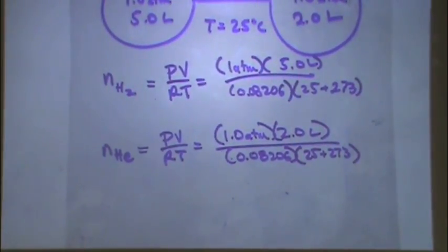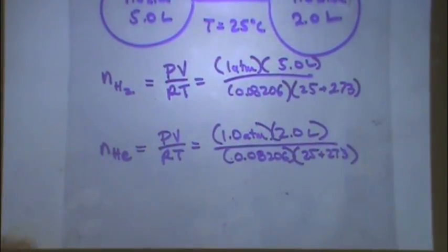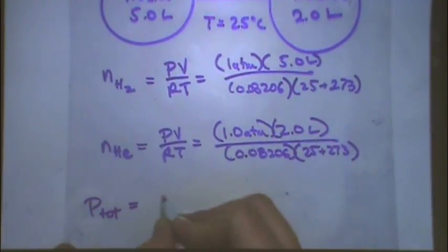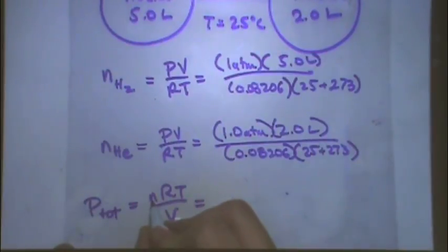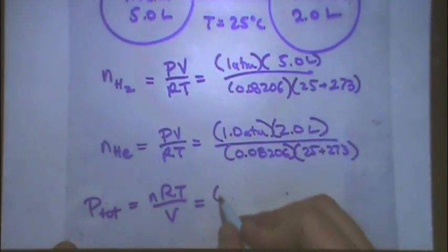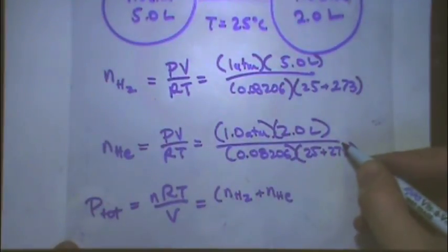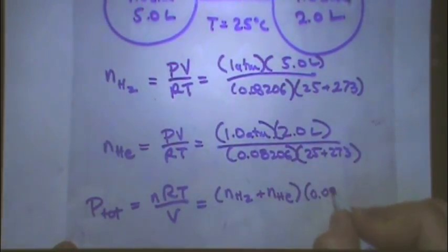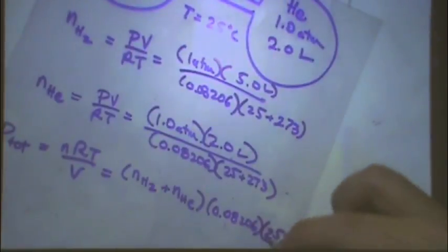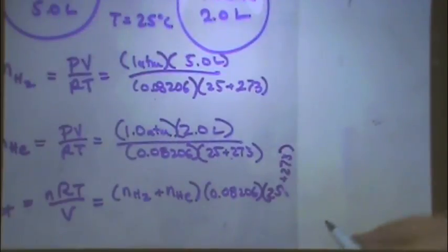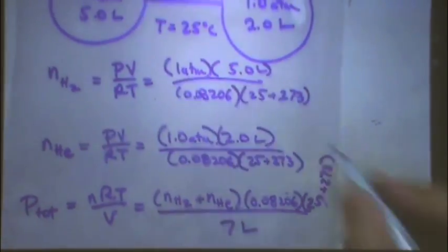Then, after you have that, now you can go to the total pressure. So, total pressure is usually where I go next. Sometimes it's given in the question. You just use what they give you. If it's not, this is how I find it. I'd say P total equals, again, the ideal gas law. But now I'm going to use the total moles and the total volume. N hydrogen plus N helium, times R, 0.08206, times T, 25 plus 273, divided by the total volume, 7 liters, 5 plus 2.